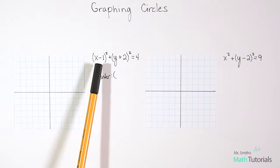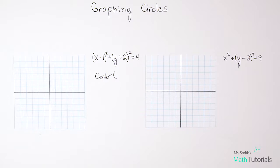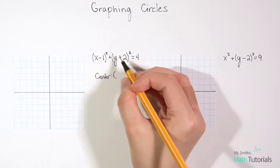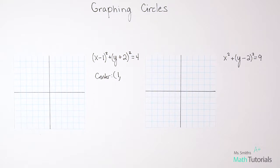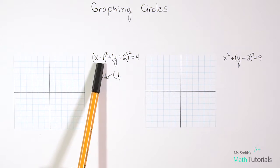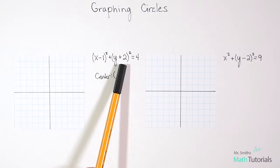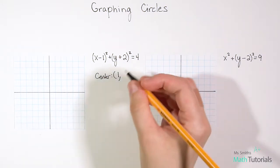So notice that this one says minus 1. So whatever that says, we take the opposite. So the opposite of negative 1 is a positive 1. And that goes back to the actual formula for standard form of a circle, that it's a minus h. So whatever sign is inside, we take the opposite. Without going into a bunch of detail with that, just know, whatever is there, you pull out the opposite. And same thing here, that's a plus 2. So then we pull out a negative 2.